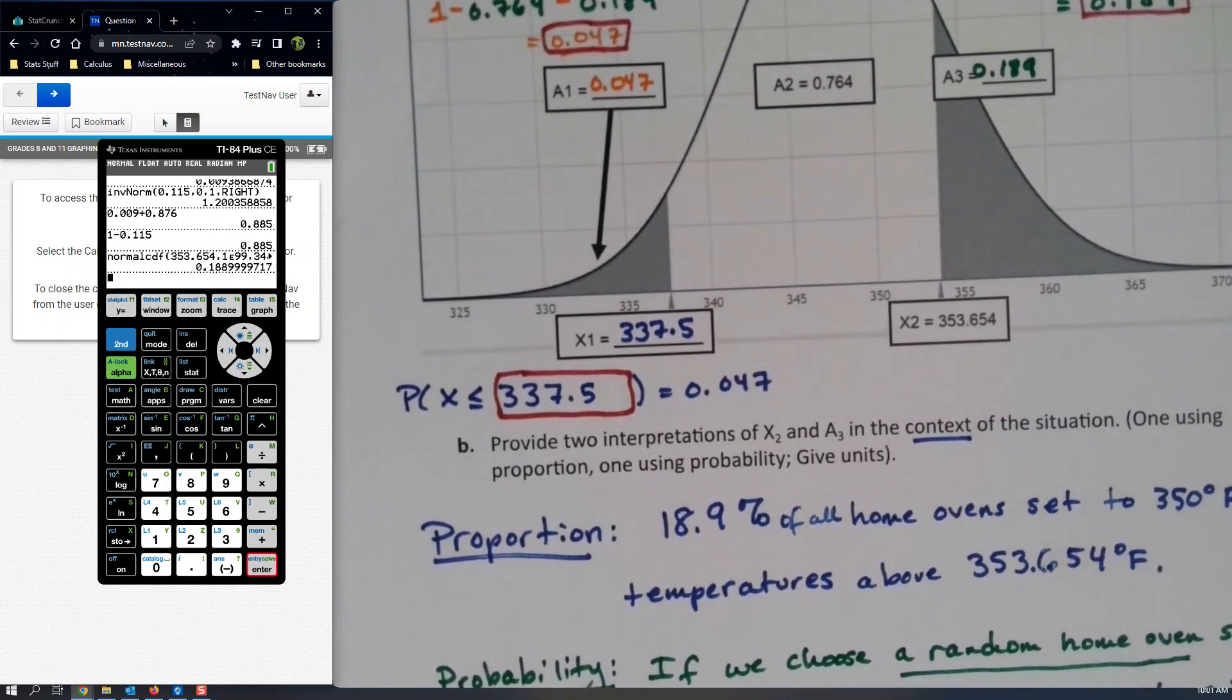So the other one we need to find is over here which, if you remember, uses inverse norm. This will be a left tail area, so this is actually the same with the old calculator as well as the new calculator. So second, distribution, inverse norm. Old calculators are always standard for the left tail area, so that'll work for us. So 0.047, 348.1, 6.3, left, paste, enter.